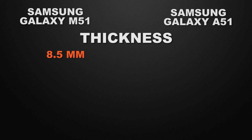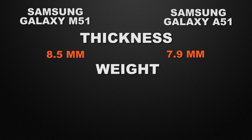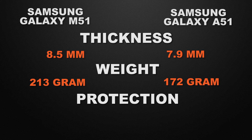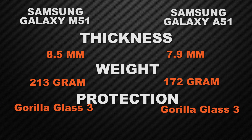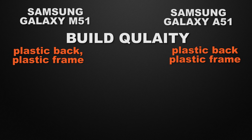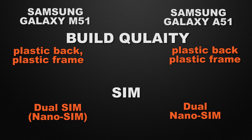Moving to the body, the M51 is 8.5 mm thick and the A51 is 7.9 mm, so A51 wins. For weight, the M51 is 230 grams and the A51 is 172 grams, so A51 wins. Both devices have Gorilla Glass 3 protection — a tie. Both have a plastic back and plastic frame — a tie. Both support dual nano SIM — a tie.